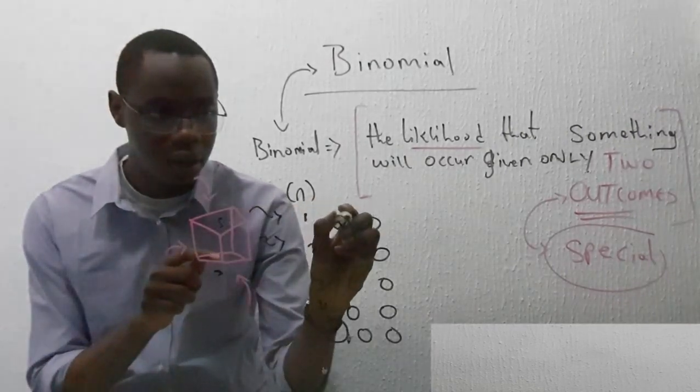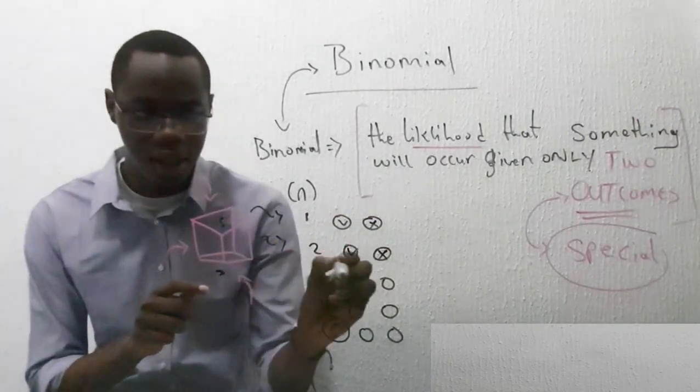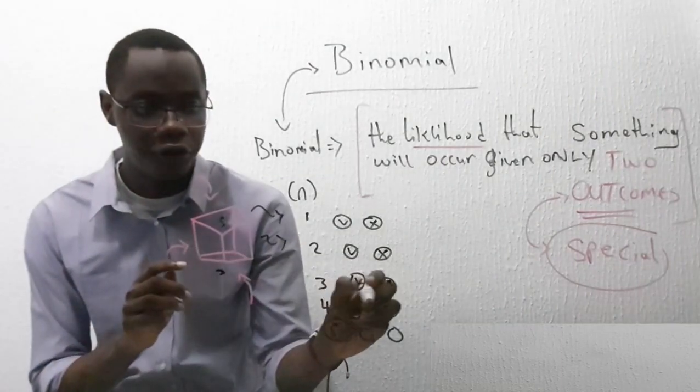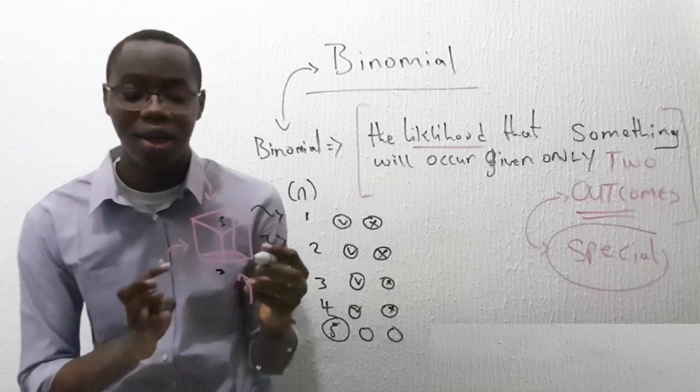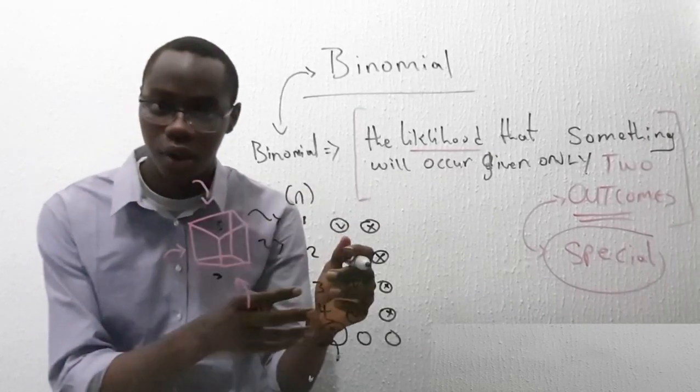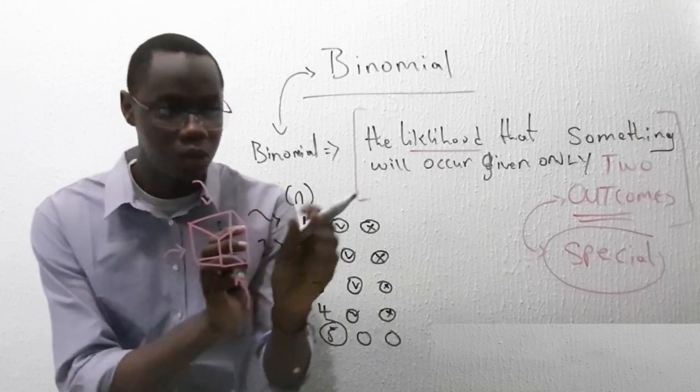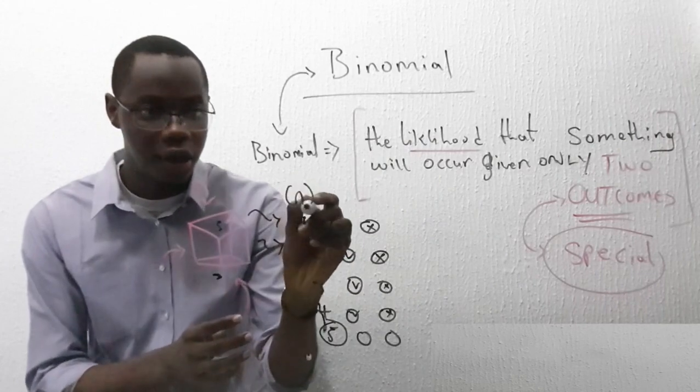We are only conditioned to having only two outcomes, two special outcomes. That means it's either we get this thing or not. It's either we pass or fail. It's either we succeed or we fail. It's either we score or not score. It's either we make the shots or not make the shots. Every time we test this thing, we get only those two special outcomes, those two special cases.